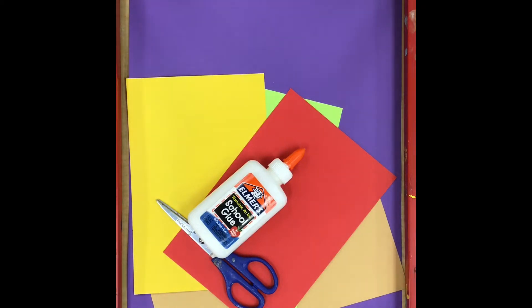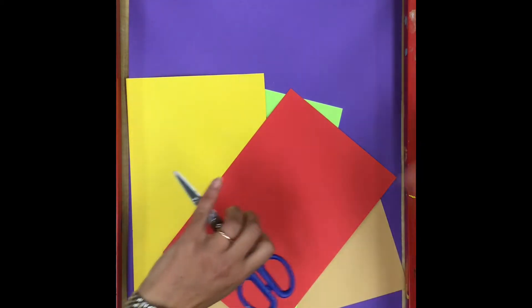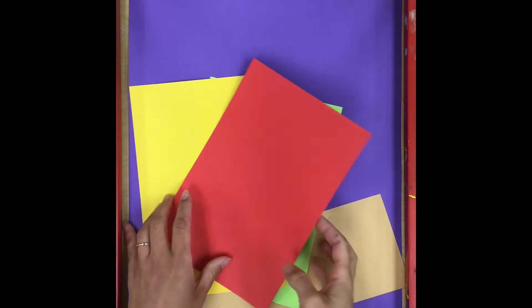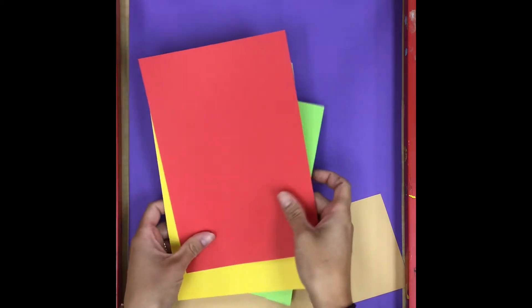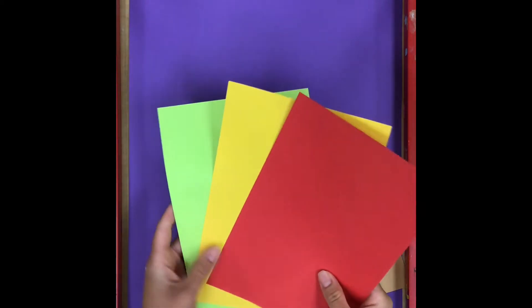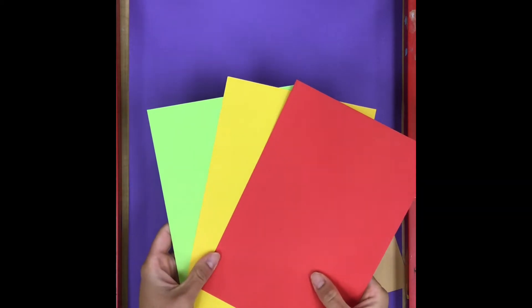Today we're going to start working on our cheeseburger collage. Now I'm going to start off with a few different scrap papers and I'm just going to keep them in a pile next to me. These are going to be what I use to make all my different and creative toppings.